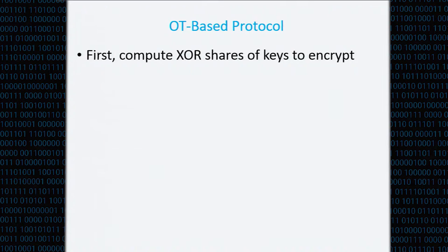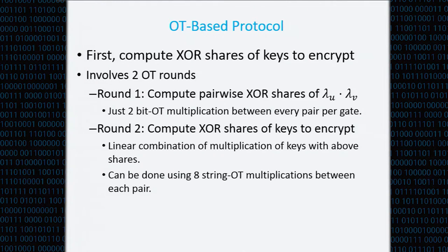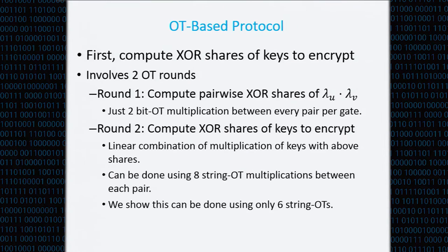In the OT-based protocol, the parties first compute source shares of the keys they're going to encrypt. This involves just two oblivious transfer rounds. In the first round, they compute source shares of multiplications of the permutation bits of input wires of the gates — just two bit OT multiplications between every pair of parties for each gate. In the second OT round, they compute the source shares of the keys they want to encrypt, which is a linear combination of multiplications of the keys with the above shares, done using just eight string OT multiplications between each pair. We also showed this can be done using just six string OTs, since two OTs are redundant.